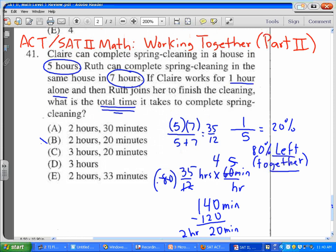answer B, but that's incorrect. The answer is not two hours and 20 minutes. Why? You have to add one hour, because remember that Claire already worked for one hour, and you want to find the total time. So if you add one hour to that, you'll have three hours and 20 minutes, and that was the correct answer for this problem.